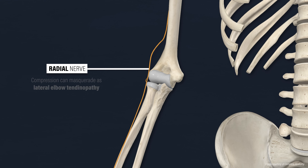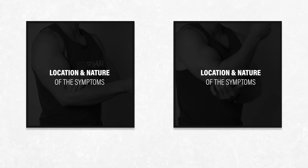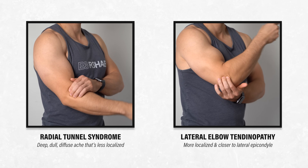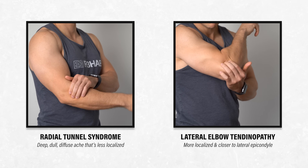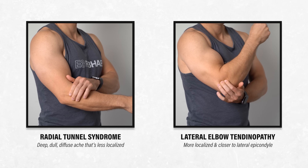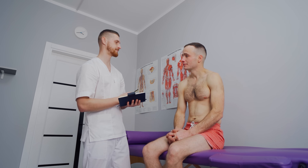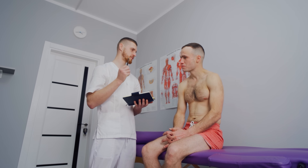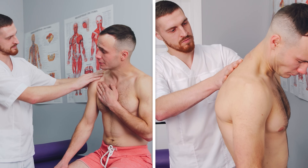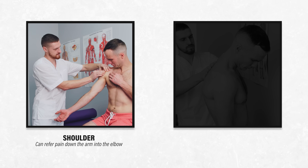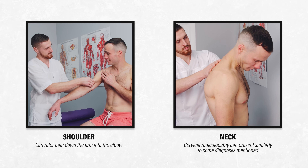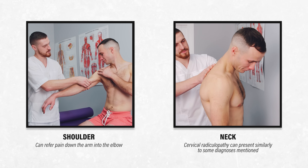Less frequently, on the outer portion of the elbow, compression of a branch of the radial nerve can masquerade as lateral elbow tendinopathy. Two key differences are the location and nature of the symptoms. Radial tunnel syndrome will present as a deep, dull, diffuse ache that's less localized than lateral elbow tendinopathy, and symptoms will be experienced further from the lateral epicondyle. The assessment of nerve-related injuries can be complex, so it's best to receive an appropriate evaluation from a licensed healthcare provider. The shoulder and neck should always be evaluated when someone is experiencing elbow symptoms, as cervical radiculopathy can present similarly to some of these diagnoses.